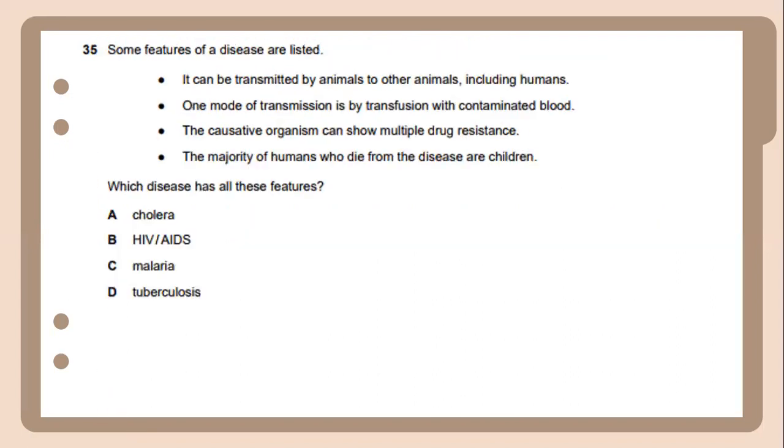Some features of a disease are listed. It can be transmitted by animals to other animals, not only humans, and one mode of transmission is by transfusion with contaminated blood. The causative organism can show multiple drug resistance, and the majority of humans will die from the disease if untreated. Which disease has all these features? The disease that has all these features is referred to as HIV-AIDS.